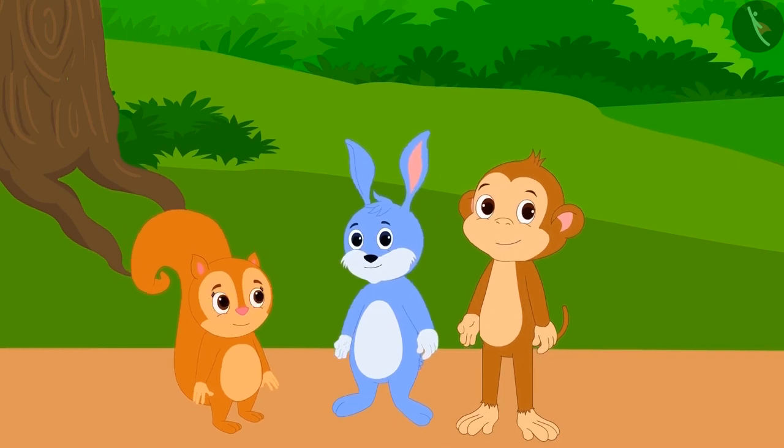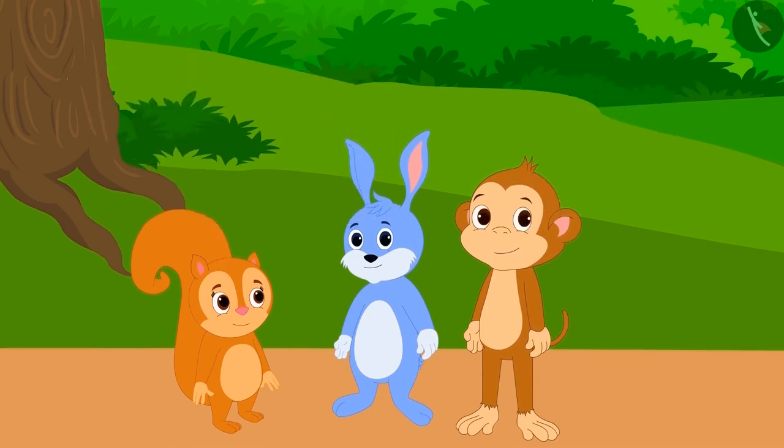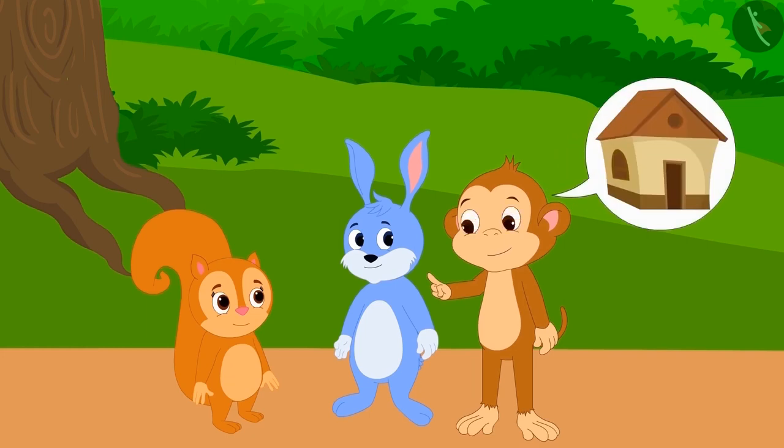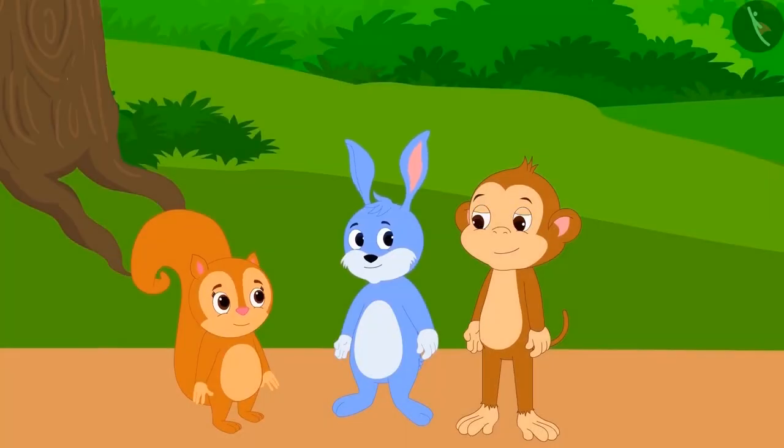Chanda Squirrel, Bunny Rabbit and Babbin Monkey decided to build a house in the forest. Babbin told Chanda and Bunny that they should build a house together so that their house is the strongest. But Chanda and Bunny refused and said that they will build their own separate houses.